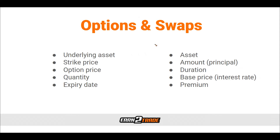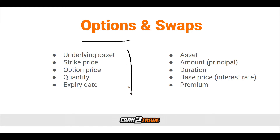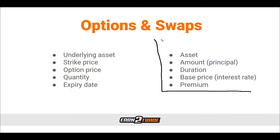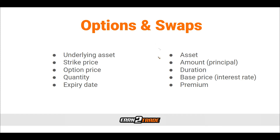The final two most common ways to trade derivatives are options and swaps. With options, the variables always present include an underlying asset, a strike price, an option price, a quantity, and an expiration date — all listed in the options contract. We have call options, which is when we're buying, and put options, which is when we are selling or expecting something to go down. Regarding swaps, several variables are constant: the asset, the amount, the duration, the base price, and the premium.